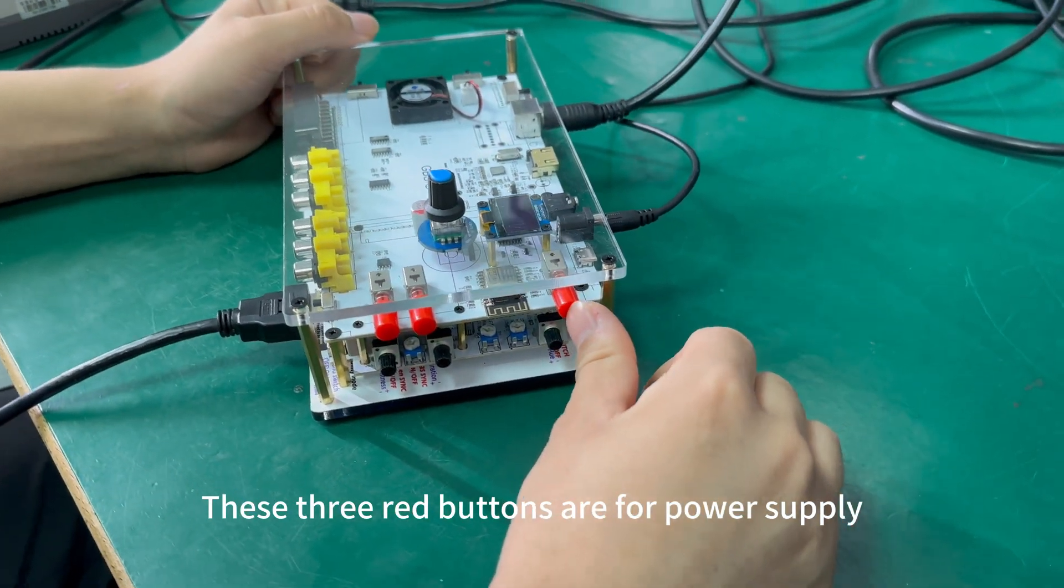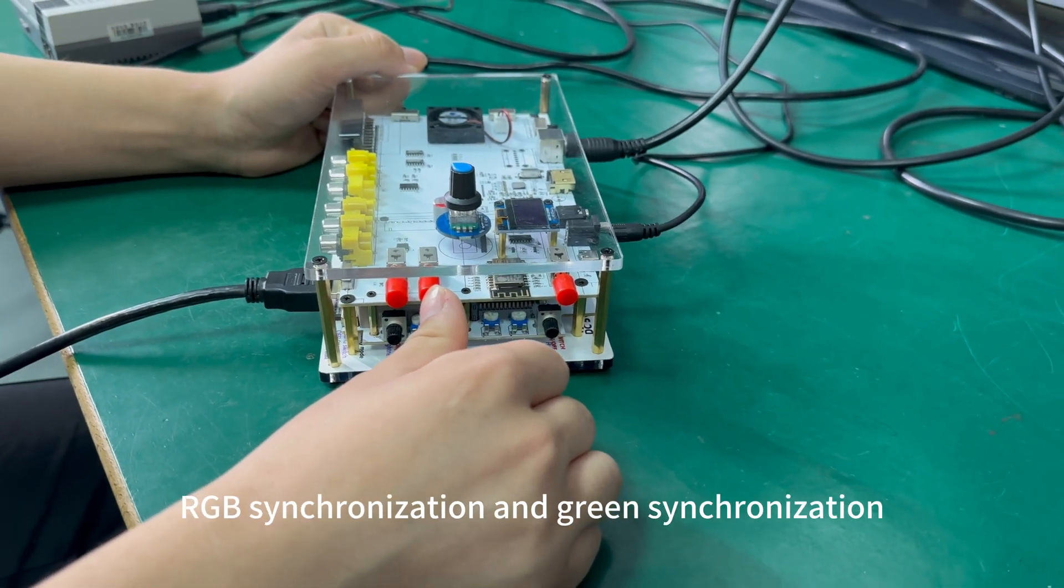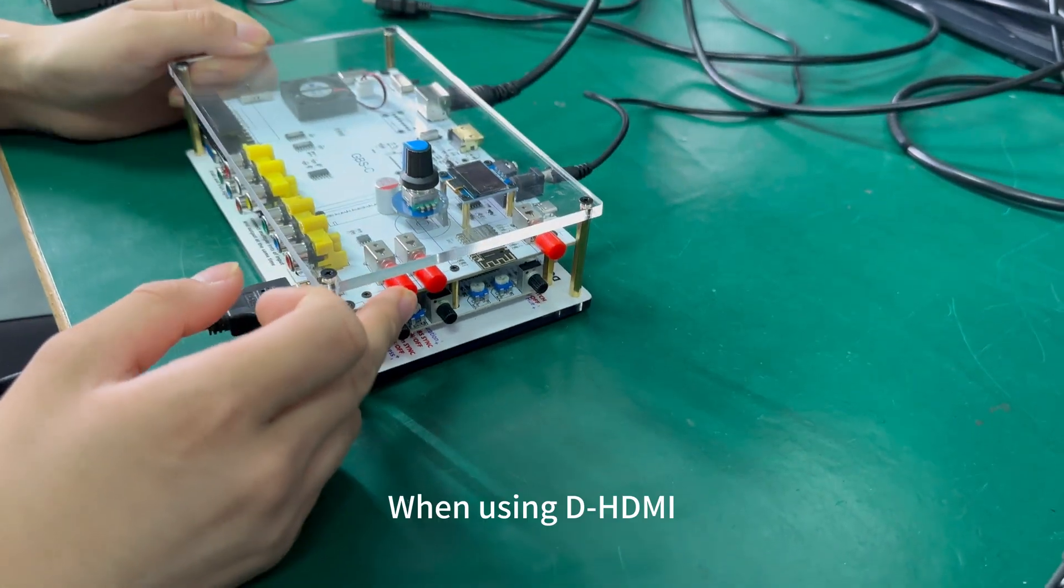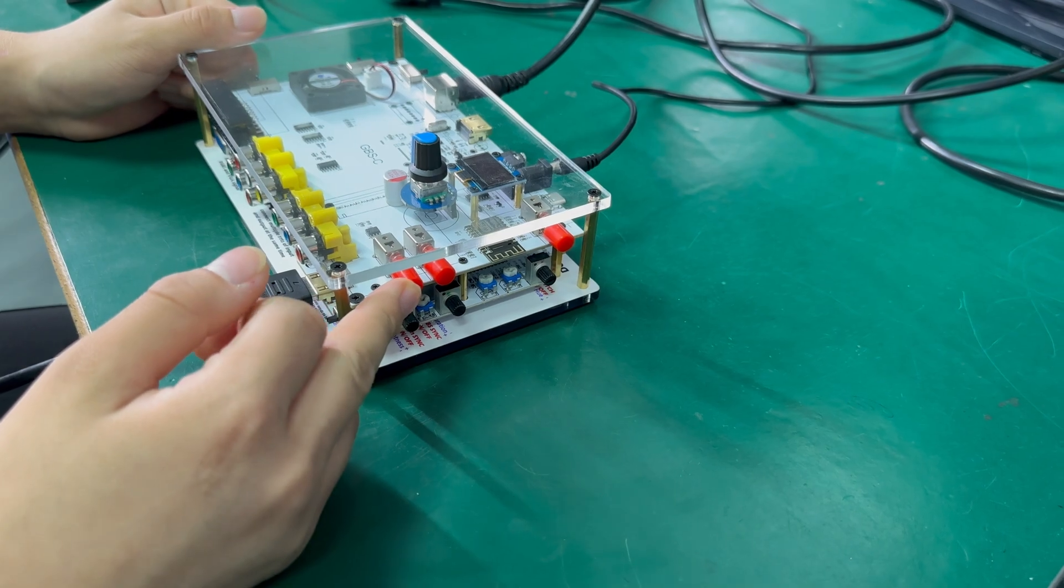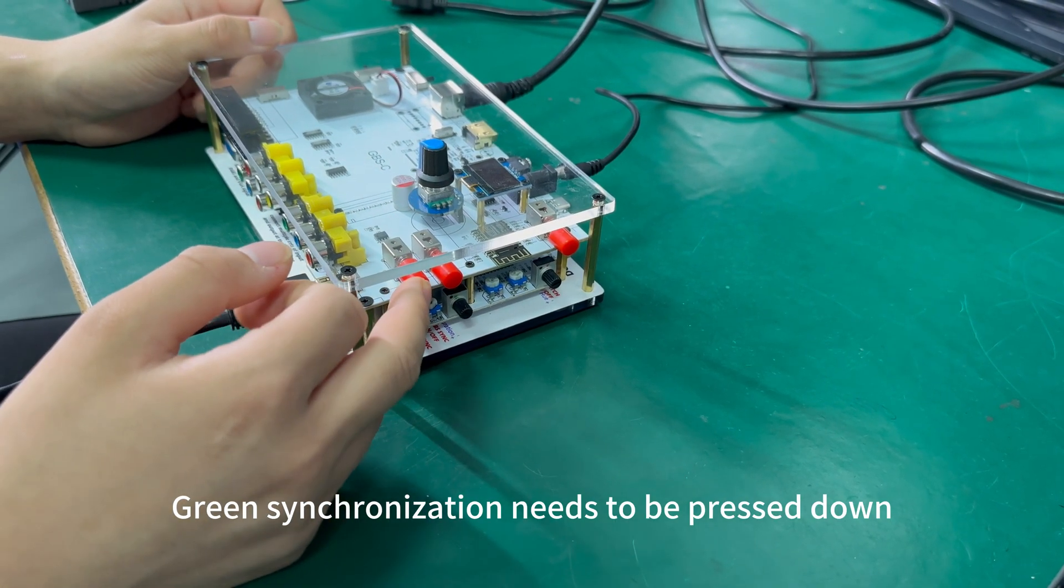These three red buttons are for power supply, RGB synchronization, and green synchronization. When using the HDMI, green synchronization needs to be pressed on.